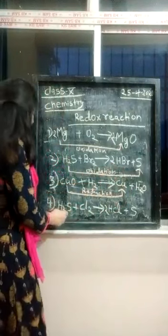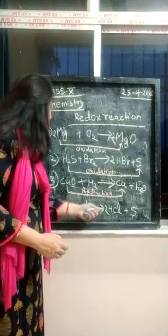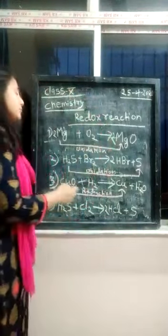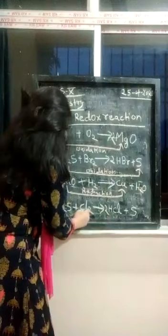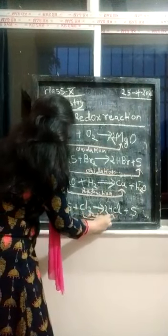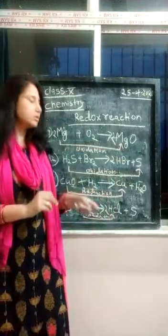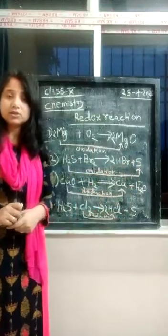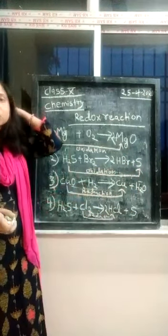Now the fourth reaction: hydrogen sulfide reacts with chlorine. Hydrogen is being added to chlorine, and hydrogen chloride is formed. Addition of hydrogen is the reduction process. So here chlorine is being reduced — chlorine undergoes reduction to form hydrogen chloride.